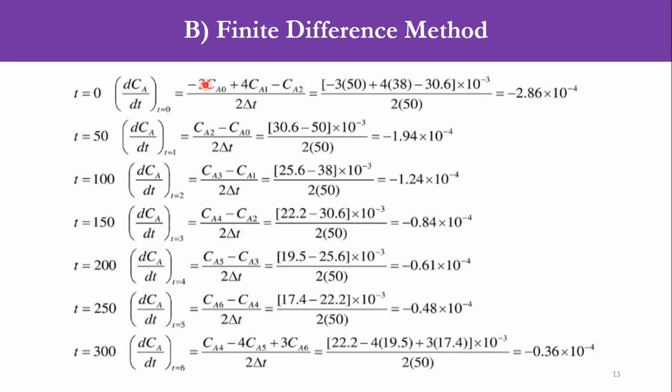The first point considers the first 3 concentration values and the last point considers the last 3 concentration values, so that is (CA4 - 4CA5 + 3CA6), and that gives the answer of -0.36×10^-4. How? CA4 is 22.2, CA5 is 19.5, CA6 is 17.4, and all these are 10^-3 multiples, so accordingly we get this answer.